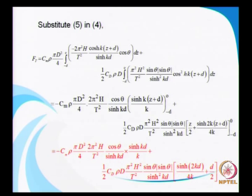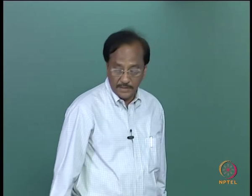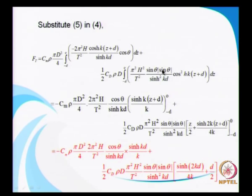Once you substitute in the Morrison equation, you will get this kind of an expression. This portion represents the acceleration term — this is the inertial component — and you add it to the drag component. Remember, you have u into absolute of u. The absolute value takes care of the direction, which is sin theta. I use the absolute value only for sin theta, which takes care of the change in direction — crest or trough — and then carry out the integration.